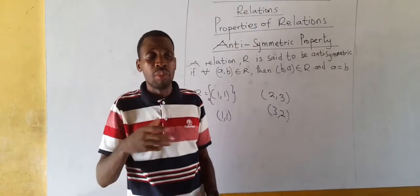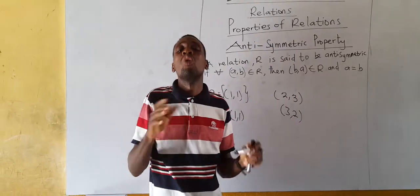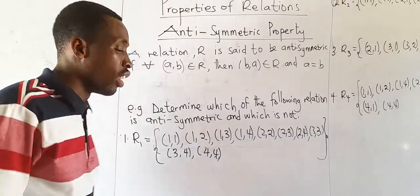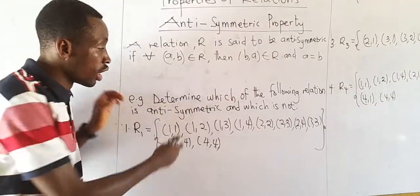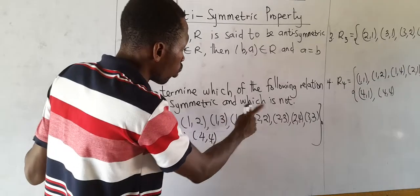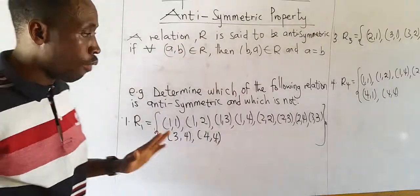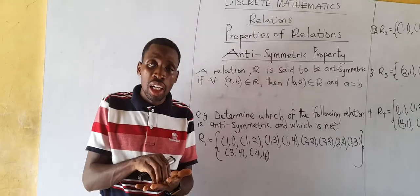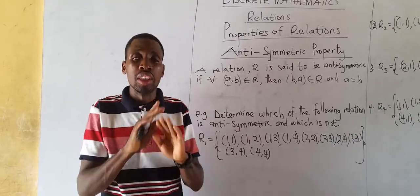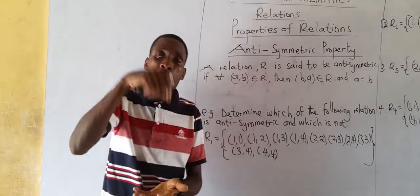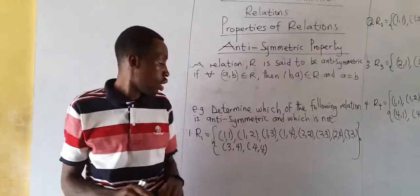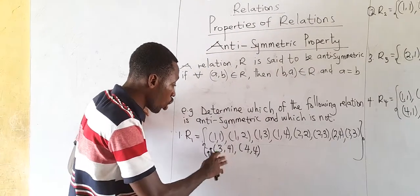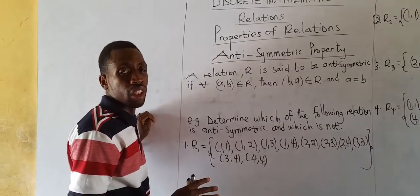The trick is: flip each ordered pair. If after flipping it is a member and the two elements are not equal, then the relation ceases to be anti-symmetric. If after flipping it is a member and they are equal, that's fine. If after flipping it is not a member at all, that's also fine. Let's take some relations and determine which ones are anti-symmetric and which are not.